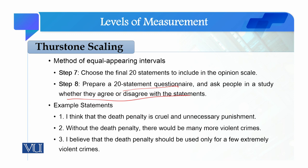We will make final questions and then ask respondents how they agree or disagree with each statement. For example, if you want to measure opinion towards death penalty, statement one might be: 'I think that the death penalty is cruel and unnecessary punishment.' The next statement could be: 'Without the death penalty, there will be many more violent crimes.' This is a contradictory statement. Another statement selected from the pool: 'I believe that the death penalty should be used only for a few extremely violent crimes.' These contrasting statements capture the range from favorable to unfavorable attitudes.